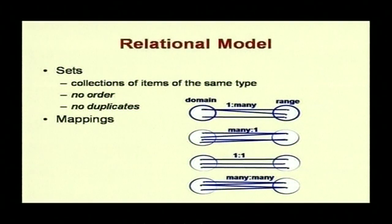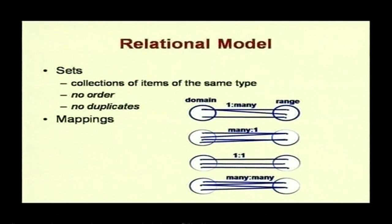The relational model is based on sets — a collection of items of the same type, with no order and no duplicates. You can have one-to-many, many-to-one, one-to-one, and many-to-many relationships between two entity sets, which we will cover in detail when discussing entity sets and ER diagrams.